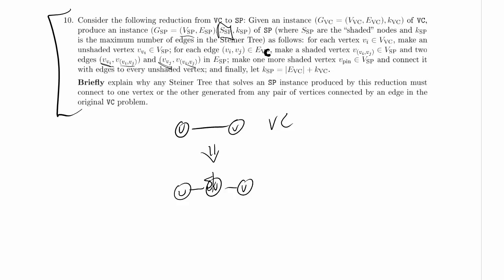Now we should ask which of these are shaded. I lost track as I was reading. So we make unshaded vertices corresponding to the vertices, and we make a shaded vertex corresponding to the edge.